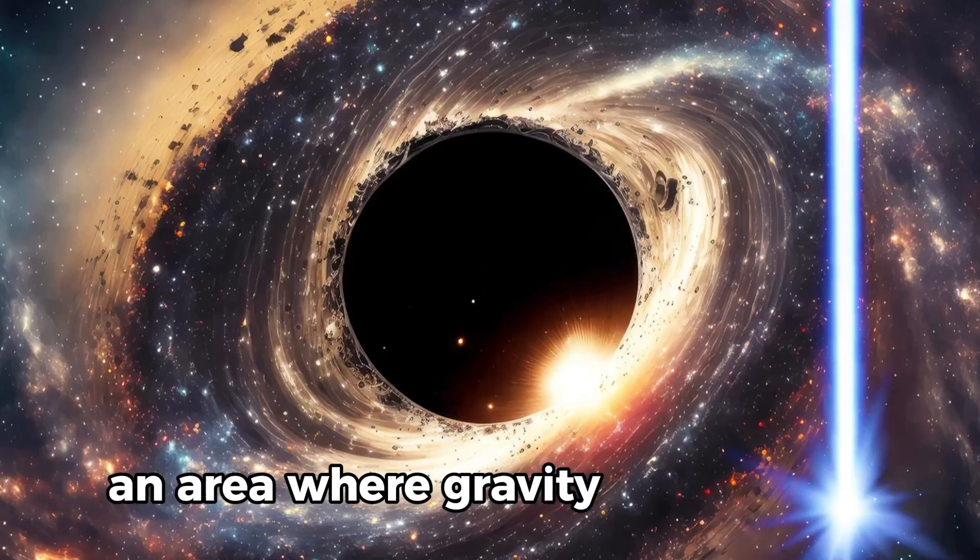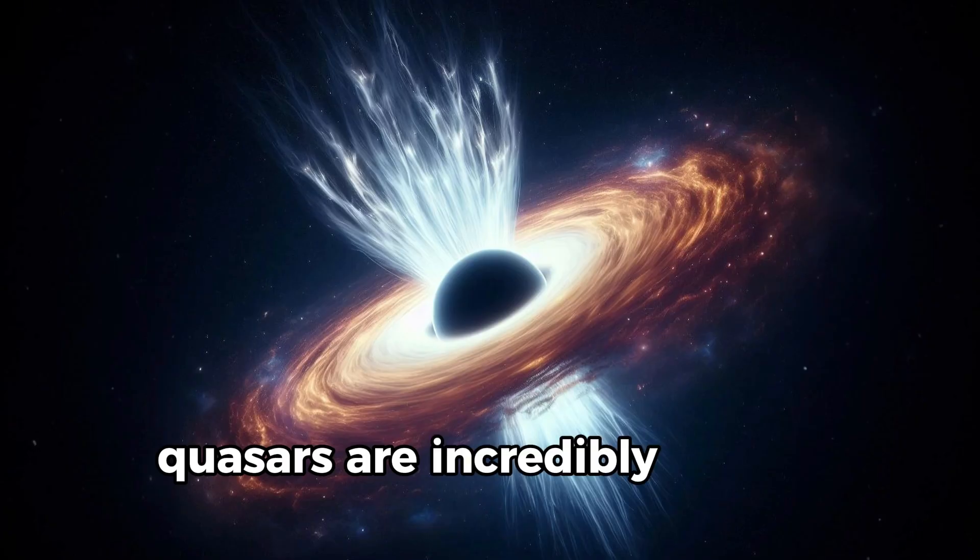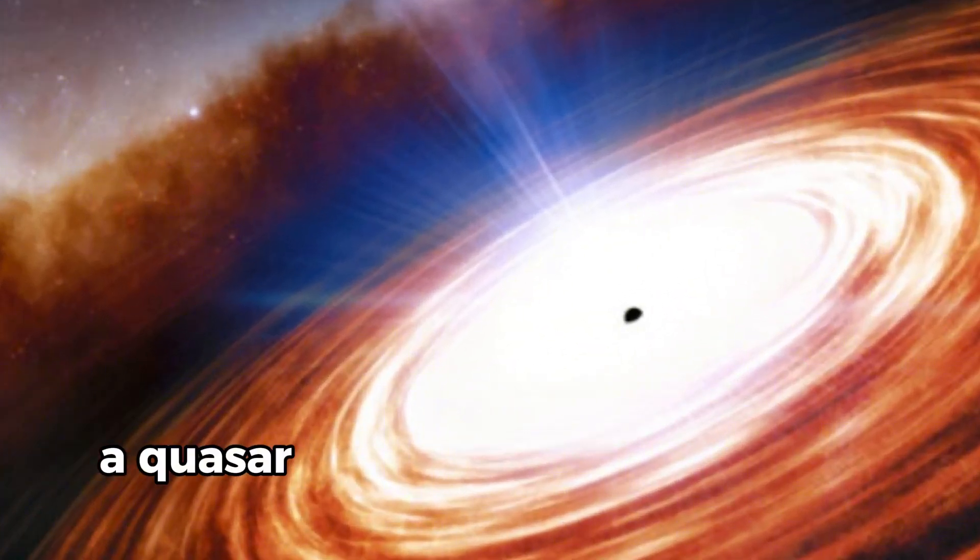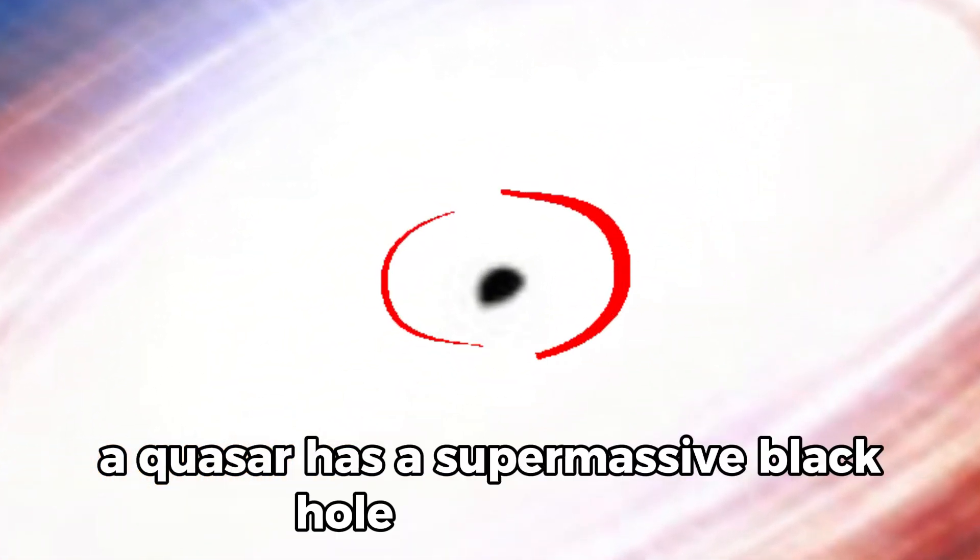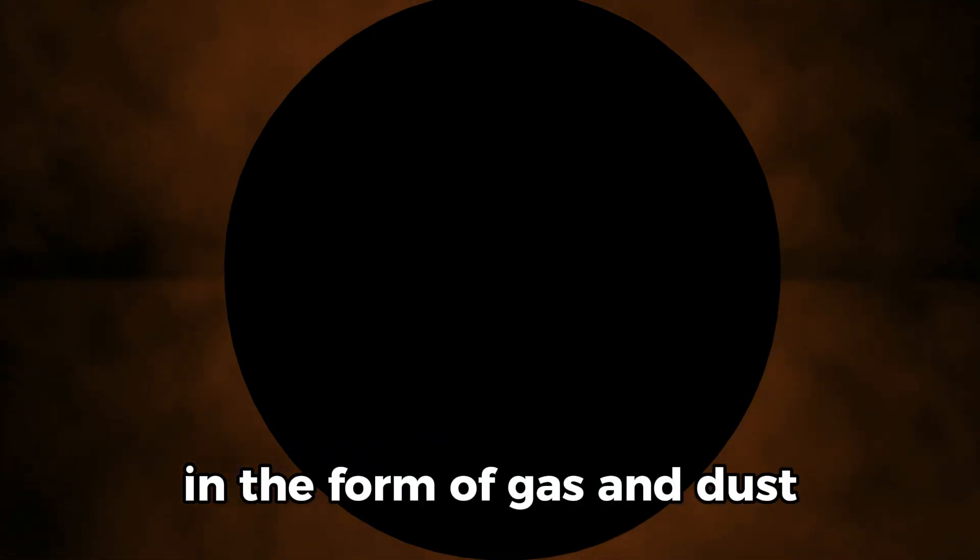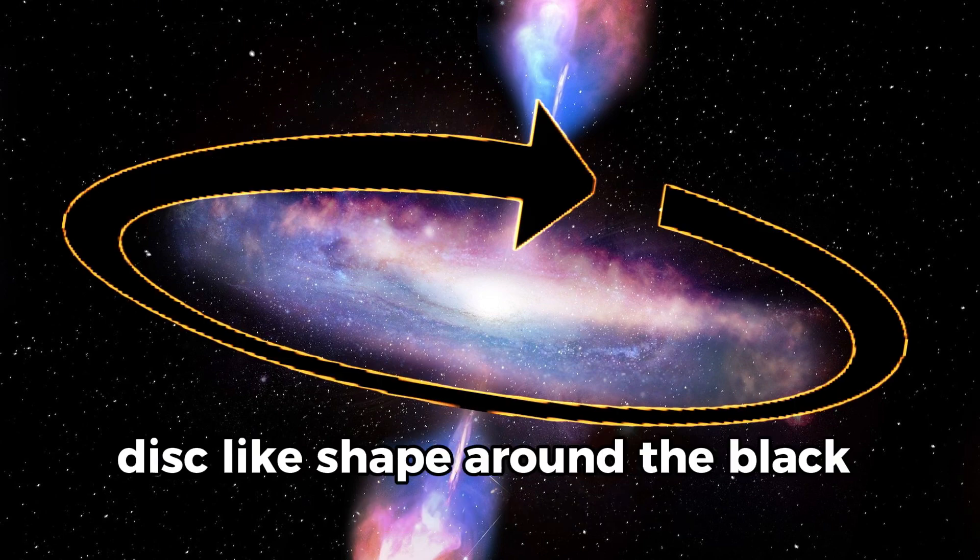Quasars are incredibly bright objects found at the center of some distant galaxies. A quasar has a supermassive black hole at the center. This black hole pulls in humongous quantities of matter in the form of gas and dust. This vast amount of gas and dust makes a spiraling disk-like shape around the black hole.